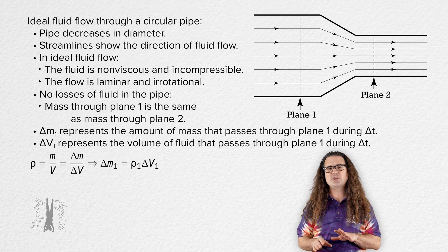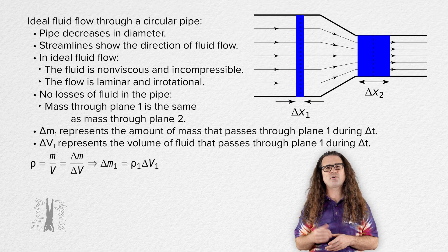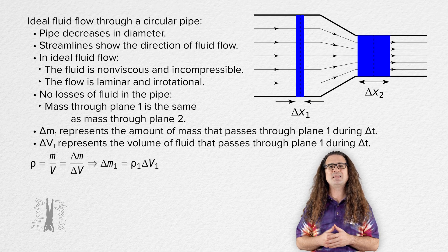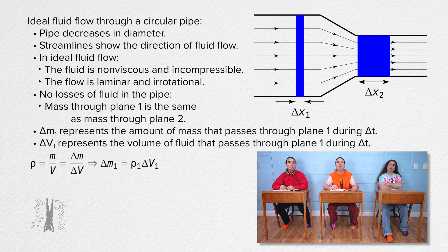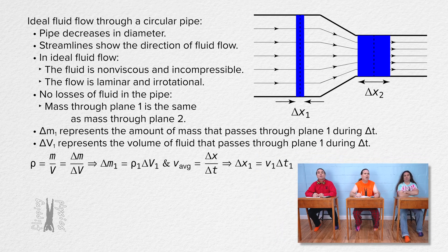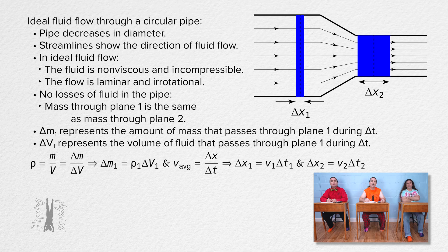During that change in time delta t, the fluid will flow through a displacement delta x. Using the equation for average velocity to solve for displacement: displacement 1 equals velocity 1 times delta t, and displacement 2 equals velocity 2 times delta t.